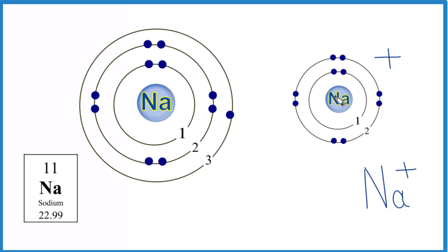But now, instead of 11 electrons, we only have 10. So the nucleus pulls these closer. The positive charges, they attract the negatives, and it pulls it closer. It makes it even a little bit smaller.